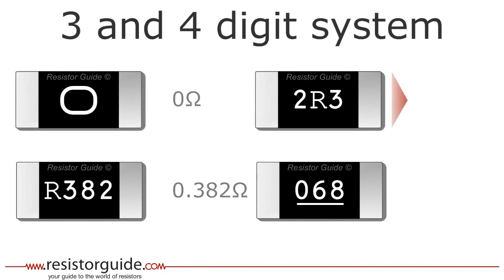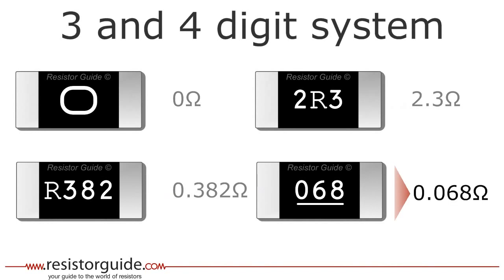The third example has the R, or decimal point, between the 2 and the 3, which means a value of 2.3 ohms. Due to space constraints, sometimes the numbers are underlined instead of using an R. So this resistor has a value of 0.068 ohms.